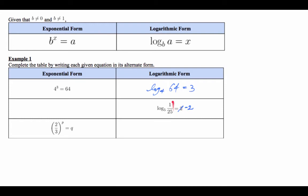So look, the input is 1 over 25, and the output is negative 2. So in exponential form, the base 5, the input is negative 2, gives you this. Is that true? Yeah, because if you have a negative exponent, that's equal to 1 over 5 squared, which is 1 over 25.